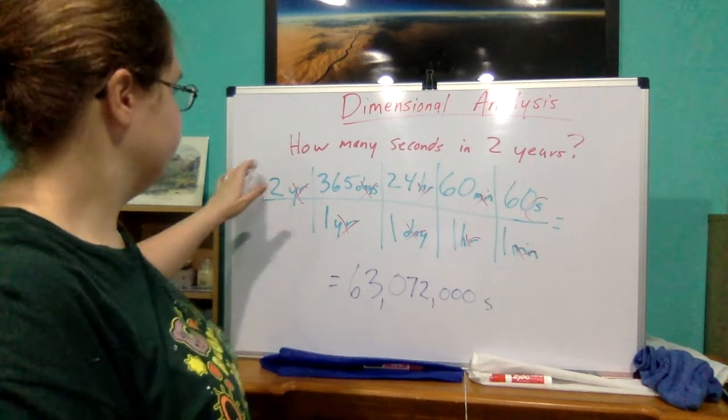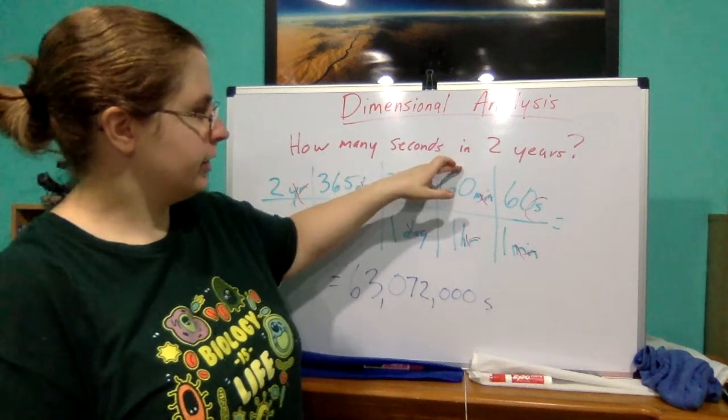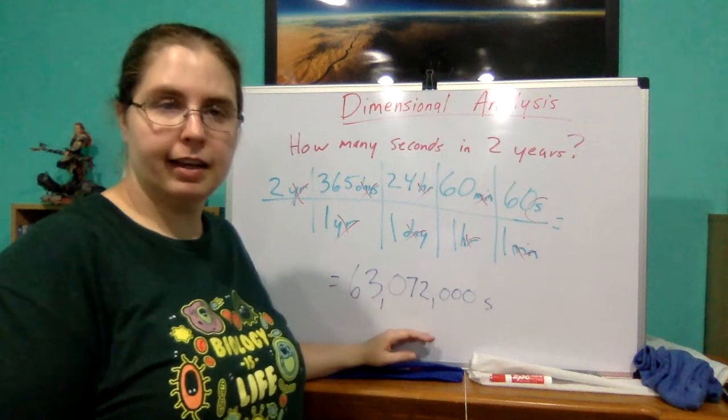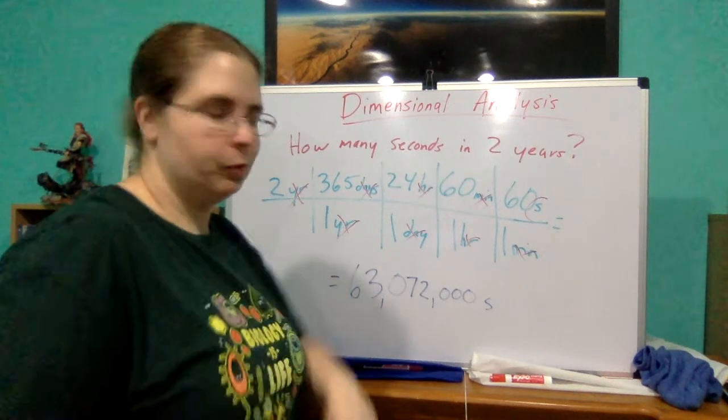And what we will get from that is 63,072,000 seconds are in two years. So all we have to do is 2 times 365 times 24 times 60 times 60, and that is how we got this answer. Alright. We'll do one more together.